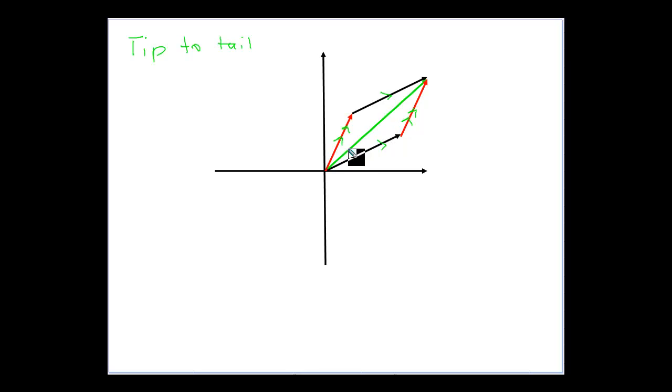They're the same and they're the same distance. So basically if we can create a parallelogram, the diagonal of the parallelogram here would be our addition of our two vectors.